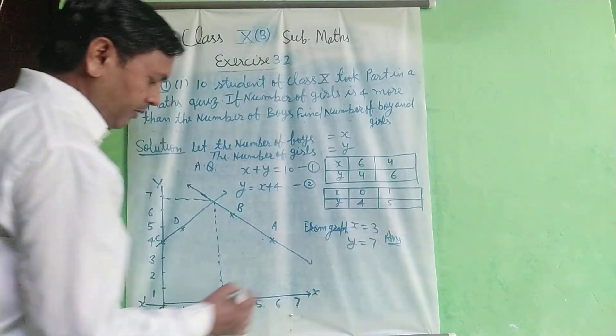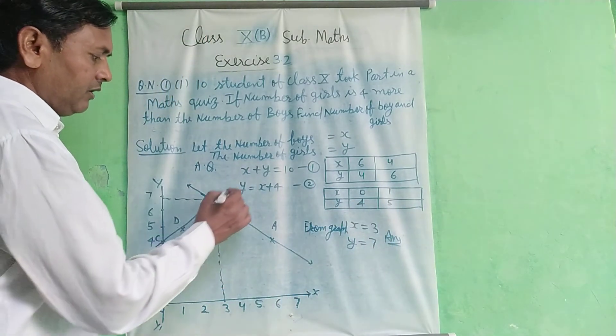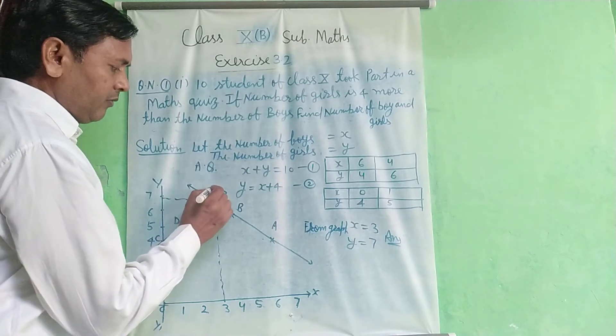Plot points (0, 4) and (1, 5). Join line CD. The lines intersect at point E.